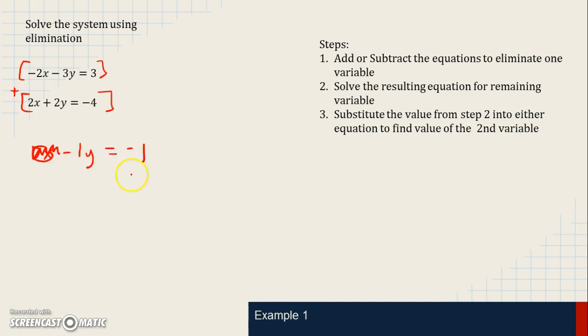And now what we're going to do is, the third step, is just solve for the remaining variable. So negative 1y equals negative 1. We're going to divide by the coefficient. And we get y equals a positive 1. So we found what y equals.